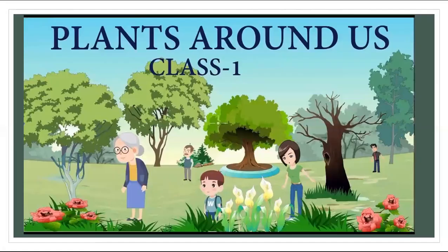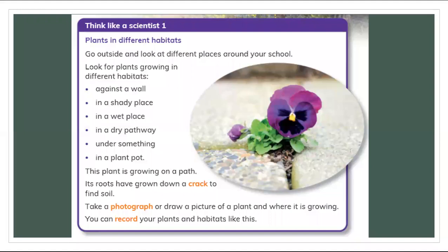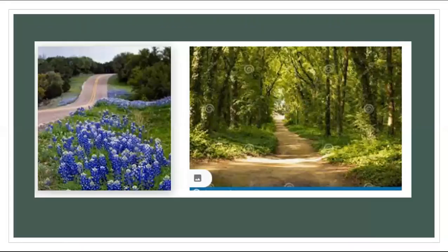Around your community you can see some small plants and big plants. Some plants can grow in shady places and some can grow on the land. You have to look around your home and make a list of where you can find plants — along the road, around the pathway — small and big plants.